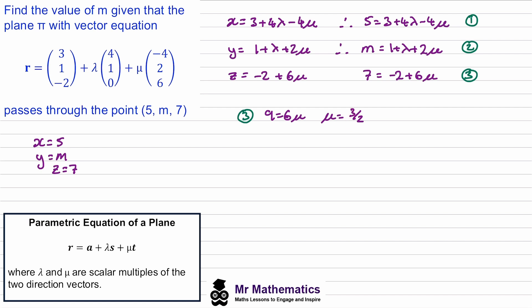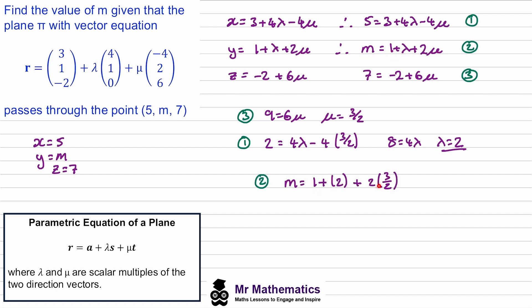From equation three we get nine equals six mu, so mu equals three over two. Substituting into equation one, we move terms to the left-hand side: eight equals four lambda, so lambda equals two. Substituting lambda and mu into equation two to work out m: m equals three plus three, so m equals six. Thank you very much for watching — if you found that helpful please like and subscribe, and you can download a full lesson from my website mrmathbyteach.com — I'll leave a link in the description below.